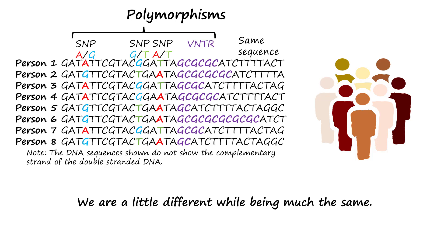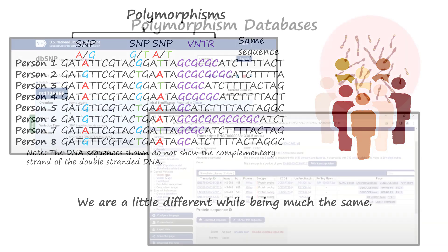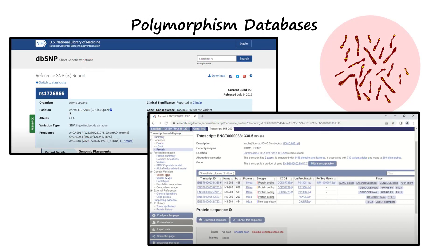The DNA sequences shown do not show the complementary strand of the double-stranded DNA. Research in DNA has revealed many polymorphic locations across the genome present in humans, as well as other species, and there are databases which keep a record of these, which we can refer to.